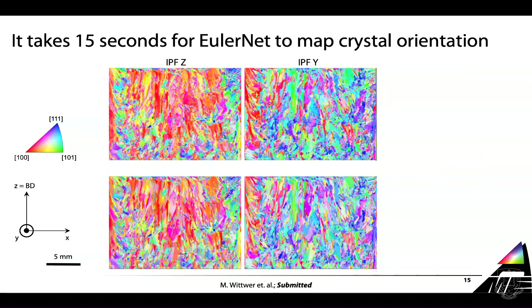In this slide I have EBSD maps and DRM maps, but I'm not telling you which one is which. I also have two sets of maps: IPF-Z showing orientation along the build direction, and IPF-Y showing orientation along the axis coming out of the page - to show you these are three-dimensional orientation measurements. Which one comes from DRM? Which one comes from EBSD? Any guesses? The top one is from DRM. So I proved my point - these maps are very similar.